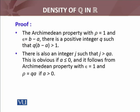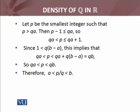There is also an integer j such that j is greater than qa. This is obvious if a is less than or equal to 0, and it follows from the Archimedean property with epsilon equal to 1 and rho equal to qa when a is greater than 0. Let p be the smallest integer such that p is greater than qa. Then p minus 1 is less than or equal to qa, giving us: qa less than p less than or equal to qa plus 1.